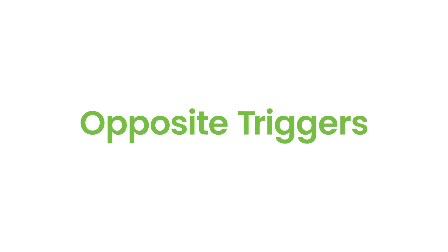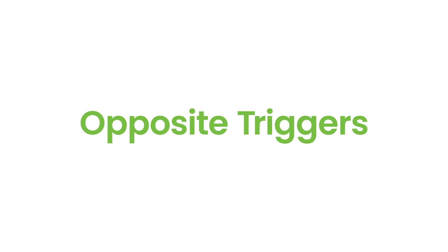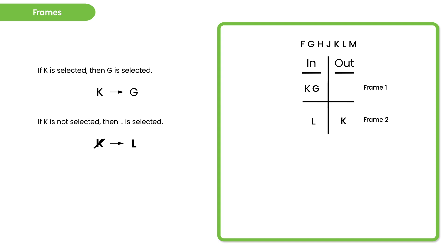Another opportunity for creating frames on in-out grouping games is based on rules with opposite triggers — where one rule has K on the left side and another has not-K on the left side. For example: 'if K is selected then G is selected' and 'if K is not selected then L is selected.' Because these two rules begin with opposite triggers, we know something no matter what. We can create one frame where K is in and another where K is not in, follow the inferences from each, and hopefully narrow the solutions further. Conditionals with opposite triggers are another good opportunity for creating forks, though you won't see it very often.